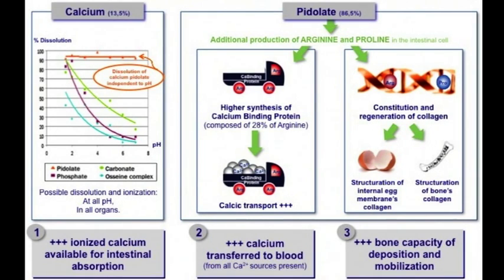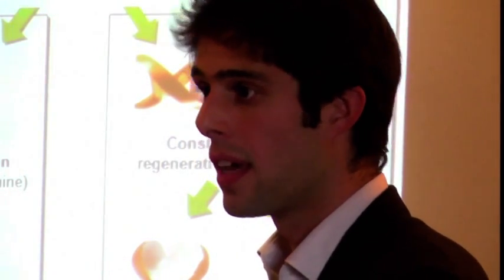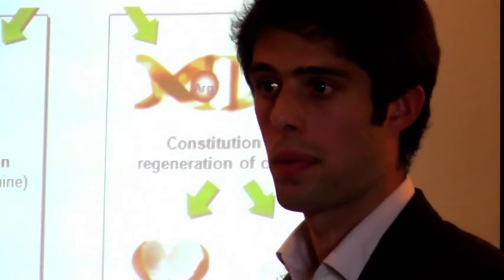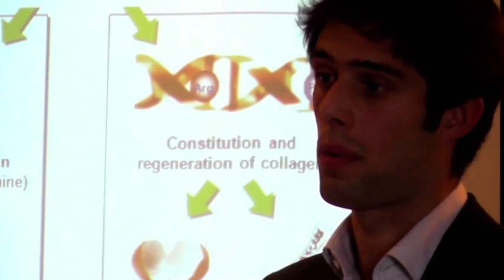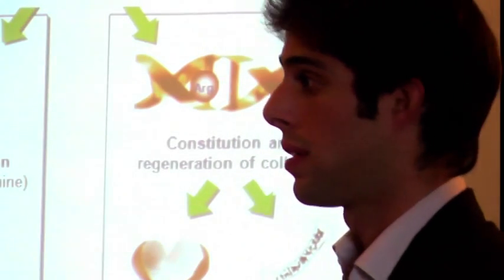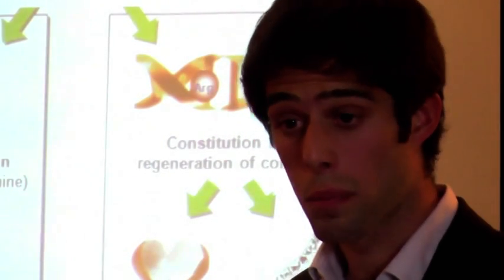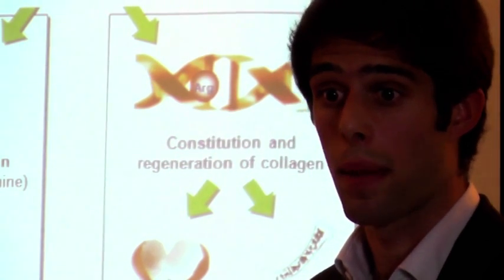The two other modes of action are due to the 86% of the molecule which is pidoate. When you introduce pidoate, you generate a higher availability of arginine and proline — pidoate is a precursor of their synthesis. The higher availability of arginine helps produce a higher quantity of a protein called calcium binding protein. This calcium binding protein is the main binder of calcium in the intestinal cell, needed to bring calcium from the intestinal cell to the blood — that's the active transport. This protein is composed of 28% arginine, which is remarkably high for one protein.